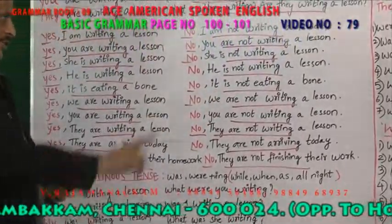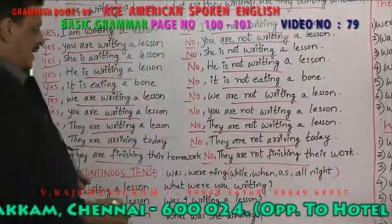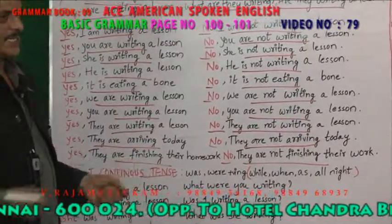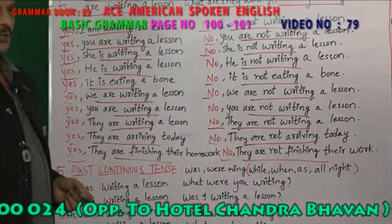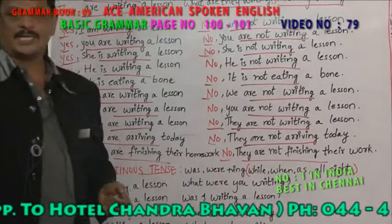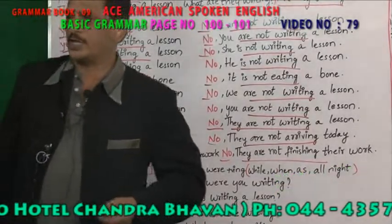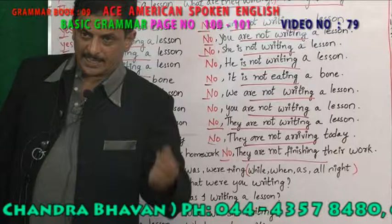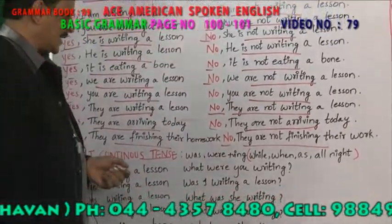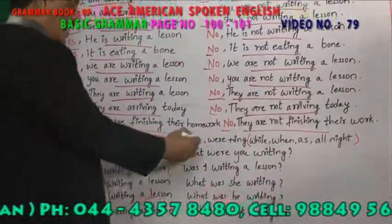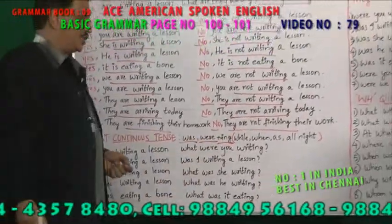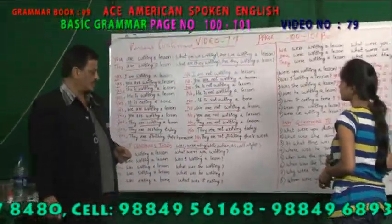Dear friends, when you ask a question in present continuous, you have to answer in present continuous. When you are asking in past continuous, you have to answer in past continuous. The keywords for past continuous are: I was watching, they were coming. So was and were plus verb plus ing — this is called past continuous.